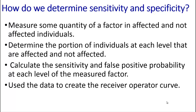So how do you determine sensitivity and specificity of a diagnostic test? You need to do an experiment. What you do is measure some quantity of a factor in both affected and non-affected individuals. From that data, you determine the proportion of individuals at each level of that factor that are both affected and not affected. From that, you can calculate sensitivity and false positive probabilities at each level of the measured factor, and finally using that data you create the receiver operator curve.